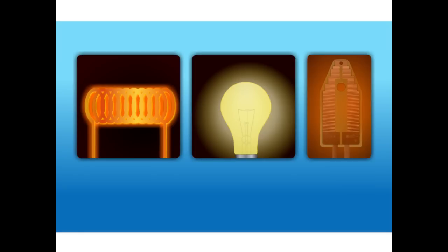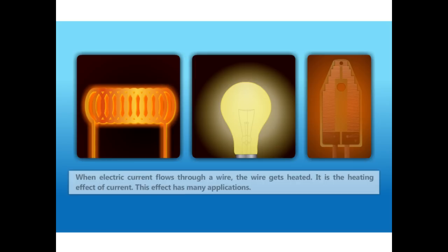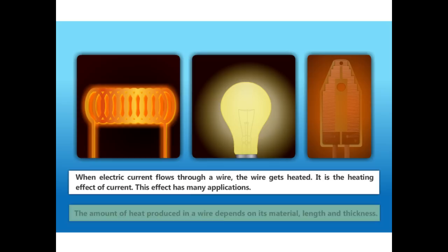All these home appliances like lamp, iron box and room heater get heated up due to electricity. The heating effect of electricity is the effect produced when electricity passes through a wire and the wire gets heated up. It should be noted that the amount of heat produced in wire depends on its material, length and thickness.